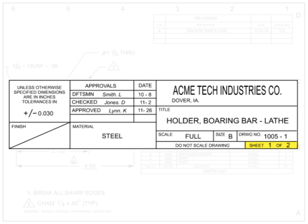Sheet numbering is critical when working on complex parts, as they may require several sheets of drawings. The first number indicates which sheet is being viewed, and the second number indicates how many sheets there are total for the drawing.